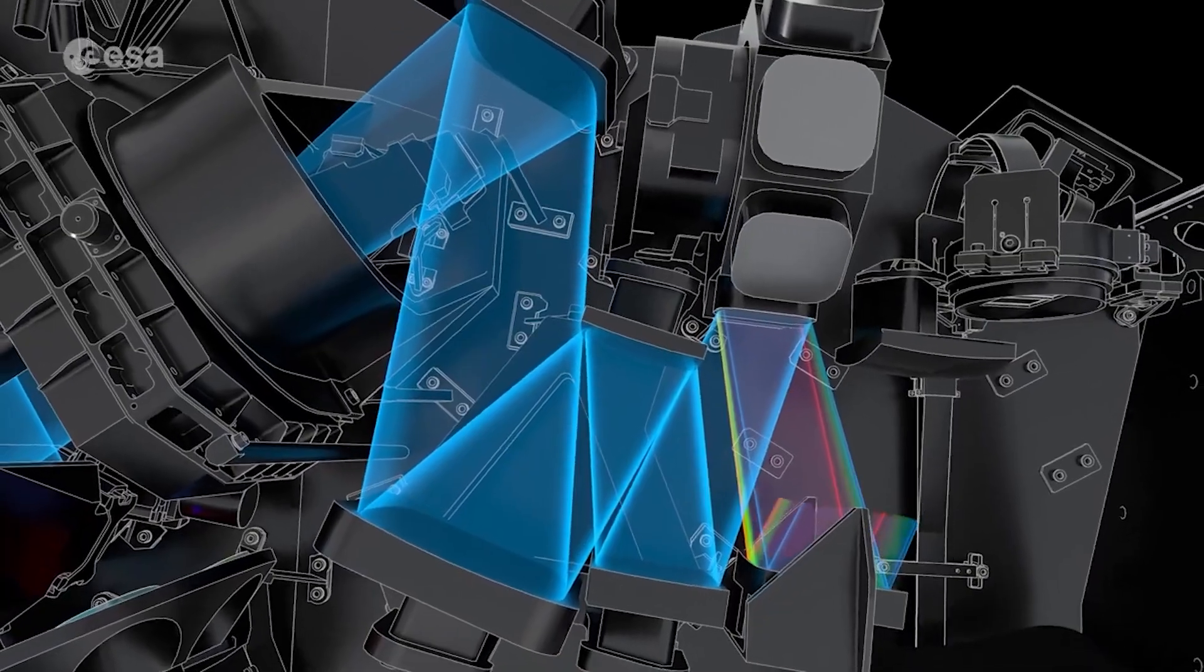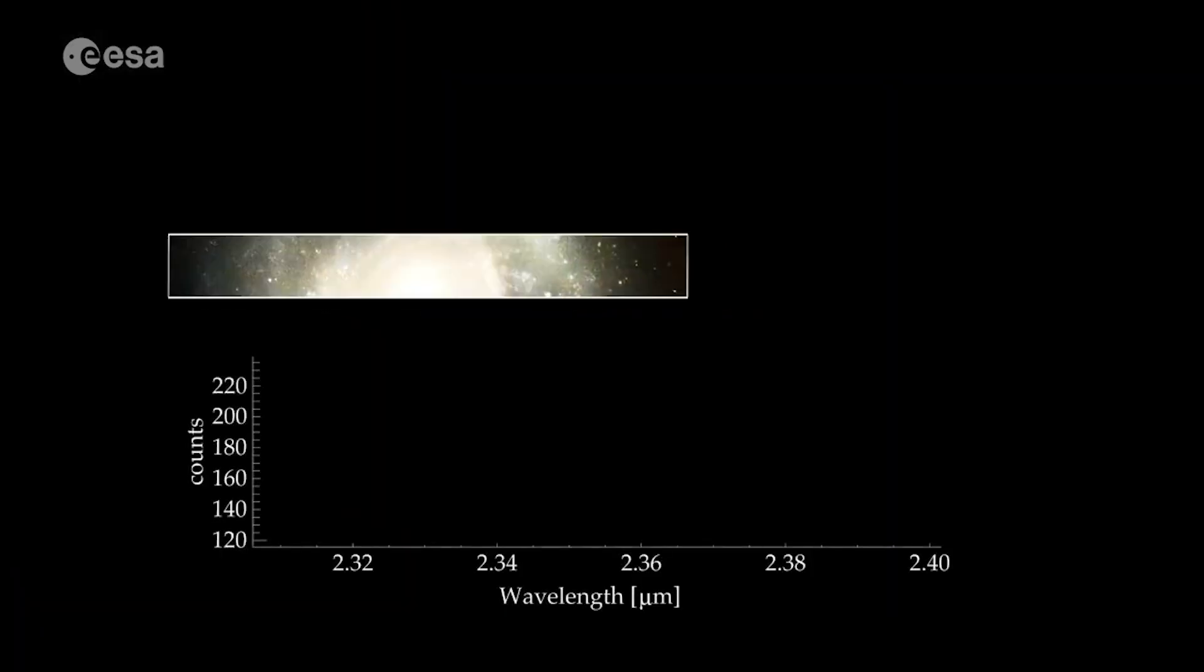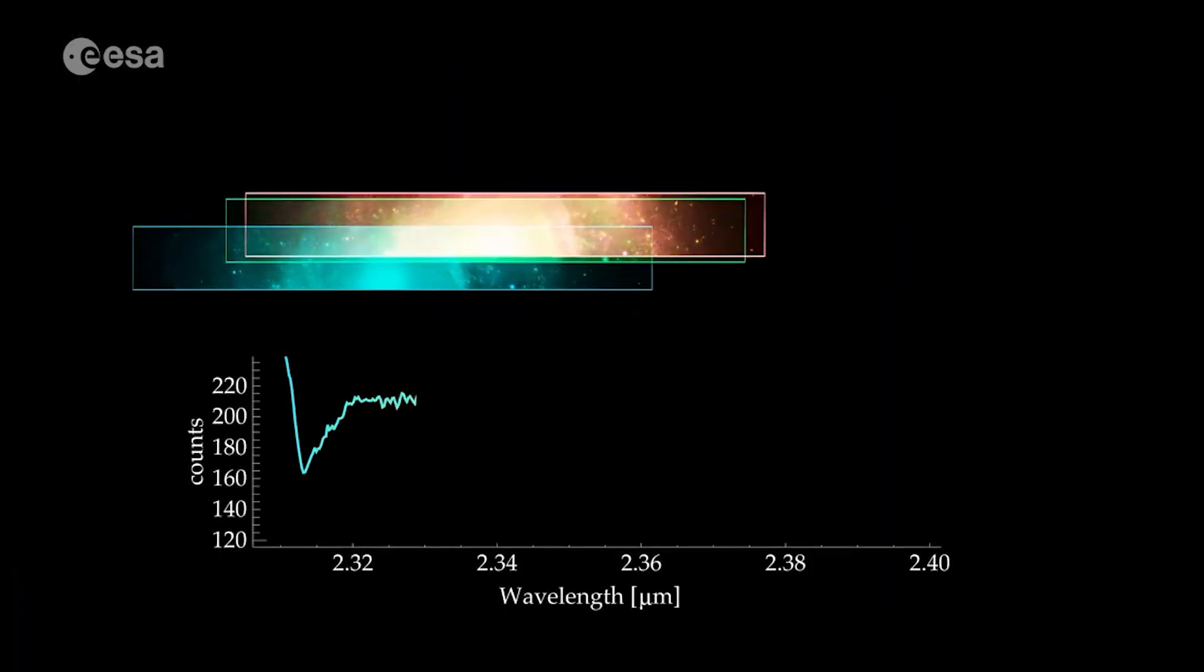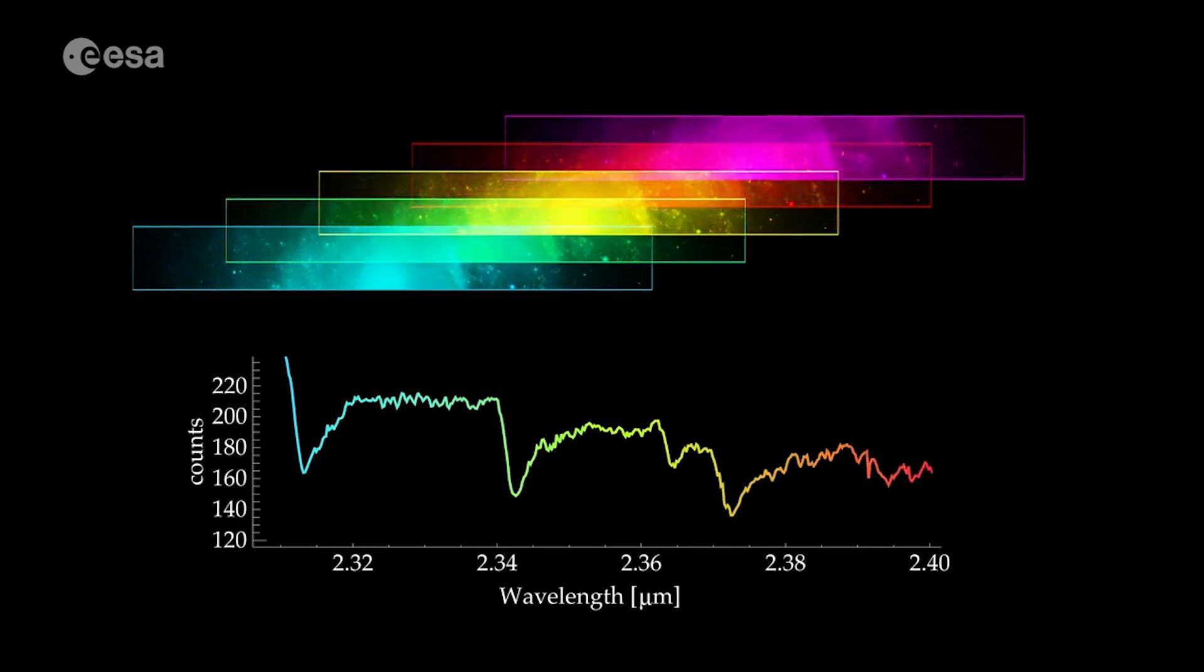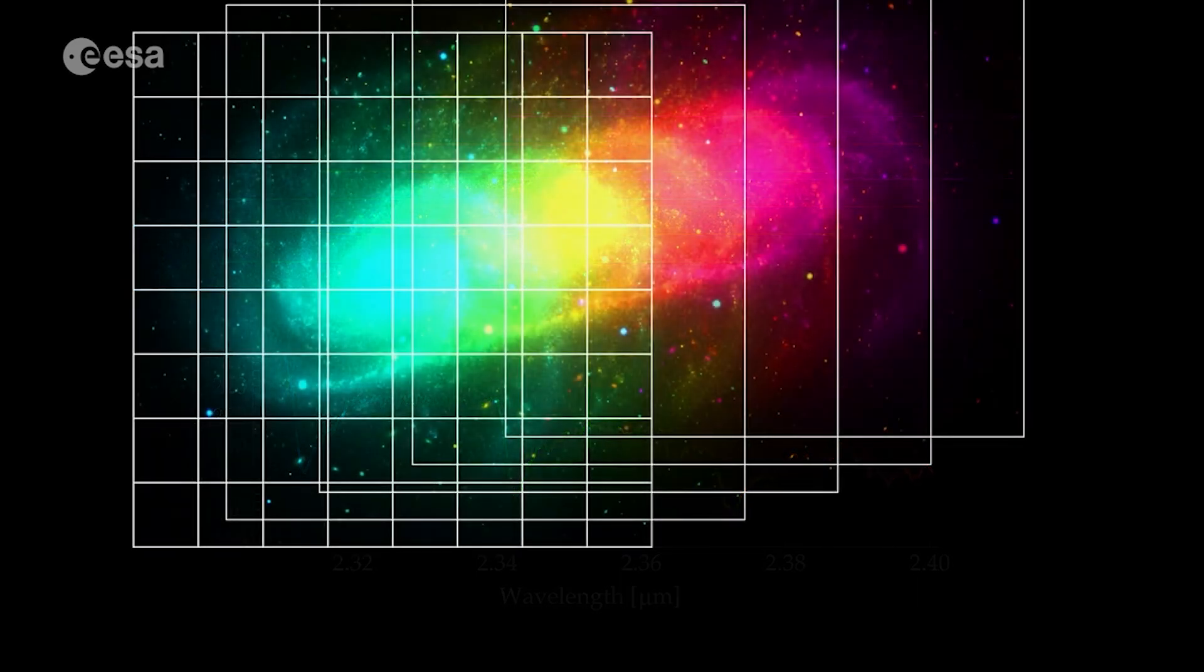This deep field, taken by Webb's near-infrared camera, NIRCAM, is a composite made from images at different wavelengths, totaling 12.5 hours, achieving depths at infrared wavelengths beyond the Hubble Space Telescope's deepest fields, which took weeks.